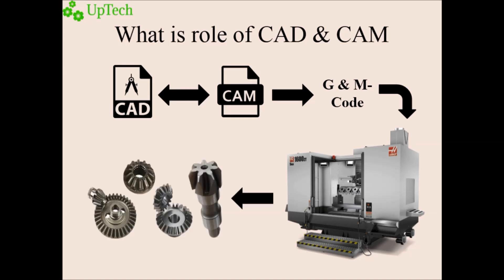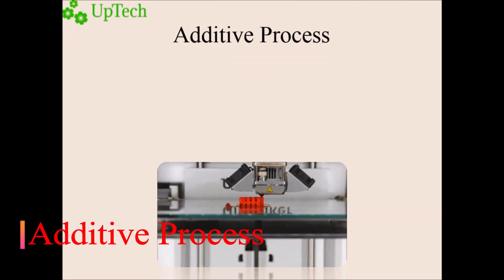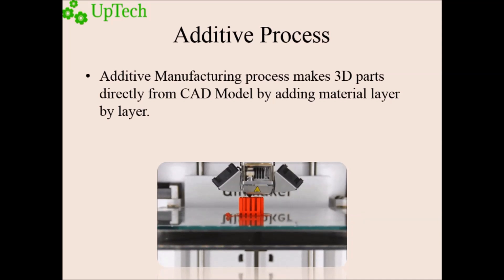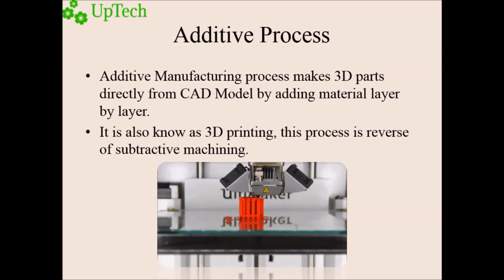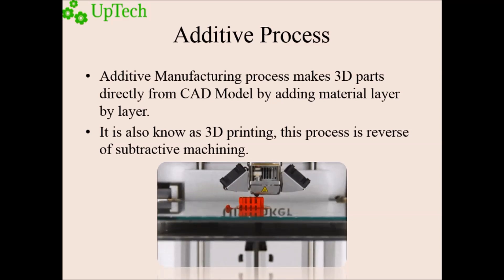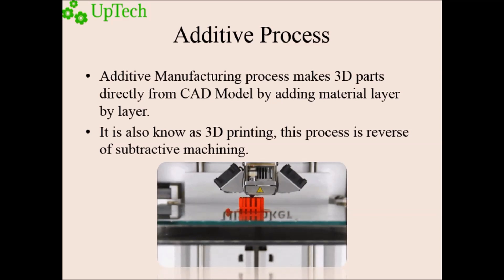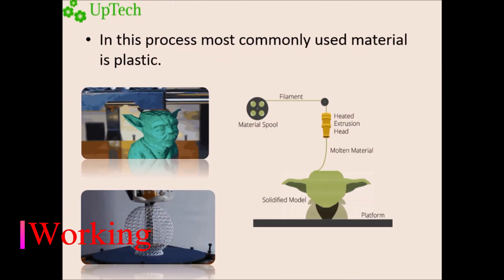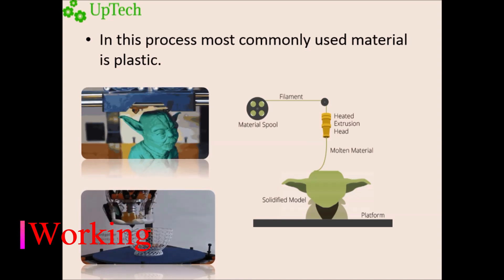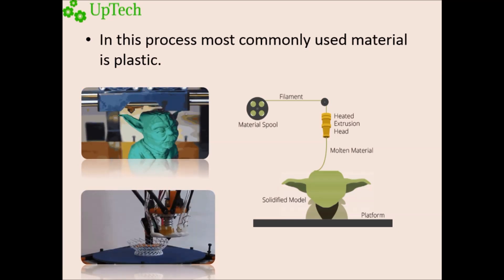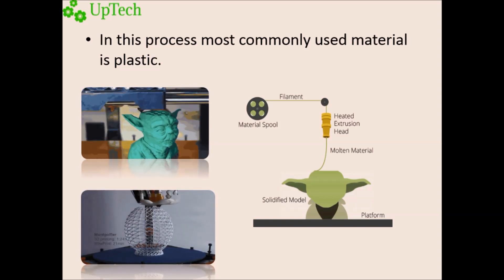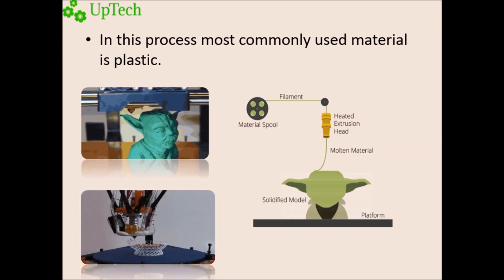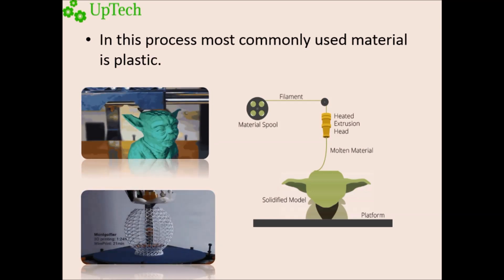Now let us focus on the additive process. Additive manufacturing makes three-dimensional parts directly from a CAD model. Let us take 3D printing as an example. This process is the reverse of subtractive machining and the most commonly used material is plastic. In this process, plastic filament is consistently fed into a heated extrusion head and the plastic is heated up to a molten state. The molten plastic is then deposited on the platform layer by layer, and a solidified model is created.